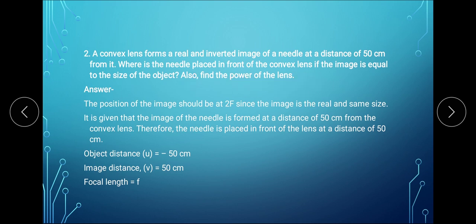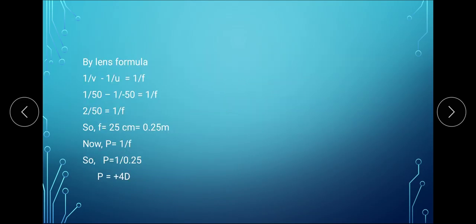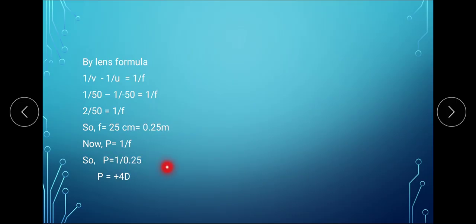Now, we have to calculate the power of the lens. Here u is minus 50 cm and v is plus 50 cm. We can find the focal length using the lens formula: 1/v minus 1/u equals 1/f. Substituting the values of u and v, you will get the focal length as 25 cm. In order to find the power, we need the focal length in meters, so convert 25 cm to meters, which is 0.25 meters. Power is equal to 1/f.